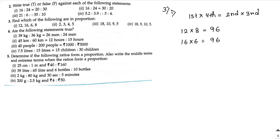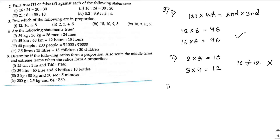Number two: first number is 2, last number is 5 — so 2 × 5 = 10. Second number is 3, third number is 4 — so 3 × 4 = 12. Since 10 is not equal to 12, it's not in proportion. Third one: 18 × 5 = 90 and 10 × 9 = 90. Equal, so yes — in proportion.